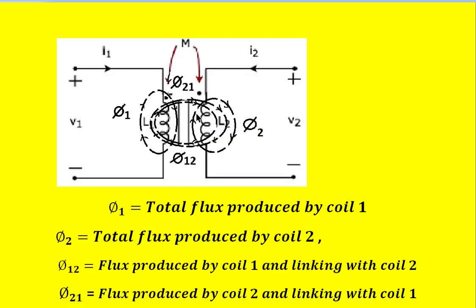To review: phi1 is the total flux produced by coil 1, but part of it also links with coil 2 — that part is called phi12. Similarly, phi2 is the total flux produced by I2 in coil 2, and the part of it that links with coil 1 is called phi21.